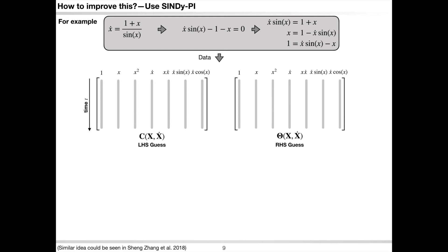Moreover, suppose I tell you that x-dot times sin x is part of the implicit equation we're trying to identify, and I'd like you to find the missing pieces. You could arrange x-dot times sin x to the left-hand side, build a library on the right-hand side, and perform sparse regression to find out the missing nonlinear bases.